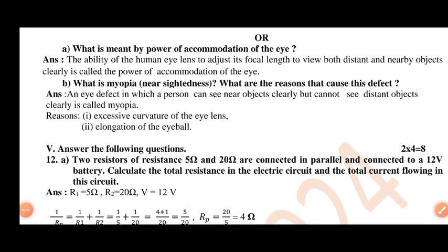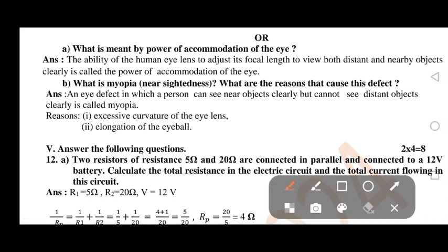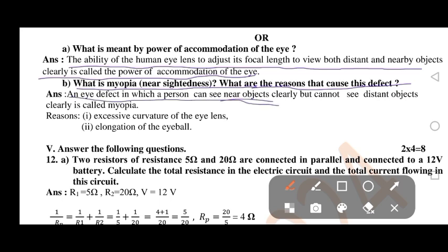What is meant by the power of accommodation of the eye? The ability of the human eye lens to adjust its focal length to view both distant and nearby objects clearly is called the power of accommodation of the eye. What is myopia? Myopia is nearsightedness. An eye defect in which a person can see near objects clearly but cannot see distant objects clearly is called myopia. The reasons are excessive curvature of the eye lens and elongation of the eyeball.